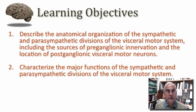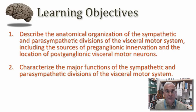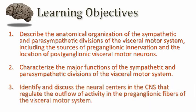Think about how these two systems interact to govern the activity of that system. And then finally, the third objective: I want you to be able to identify and discuss the neural centers in the central nervous system that regulate the outflow of activity in the preganglionic fibers of the visceral motor system — backing up to higher brain centers to understand how the brain governs the coordinated output of these two divisions.